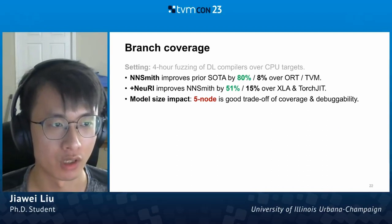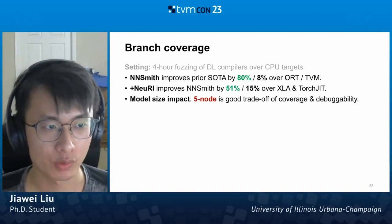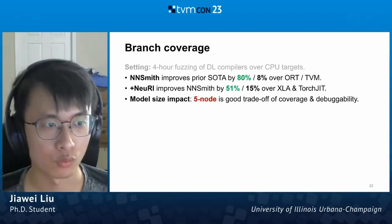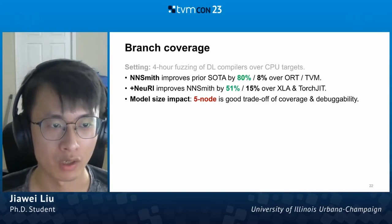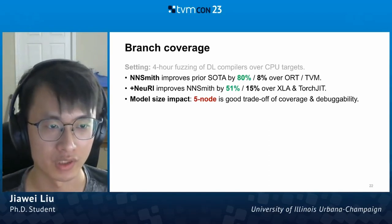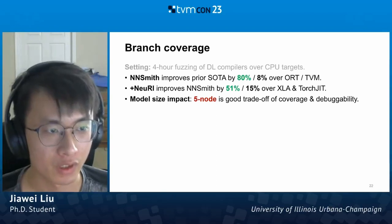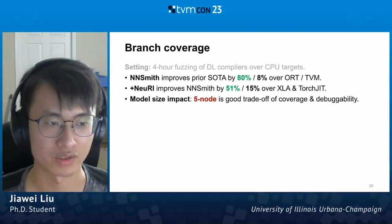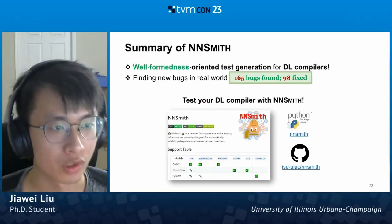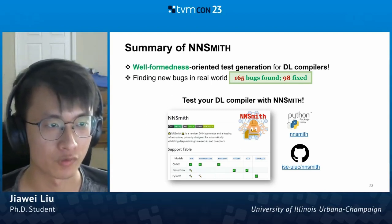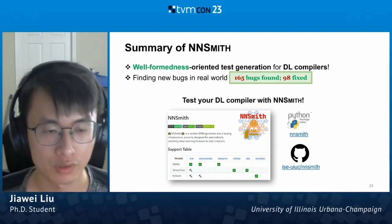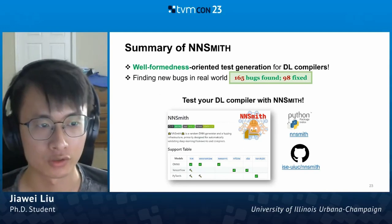We also evaluated our systems in terms of branch coverage, fuzzing the DL compilers for four hours on CPU targets for each tester. With the original NNSmith, we improve the state of the art by up to 80%. With a larger input space enabled for NNSmith, it can be further improved by up to 51%. Ablation study shows that generating graphs with at most five operators provides a good trade-off between coverage and debuggability. NNSmith performs well-formedness-oriented test case generation for DL compilers and has found over hundreds of bugs in the real world. The tool is available on GitHub and PyPI.